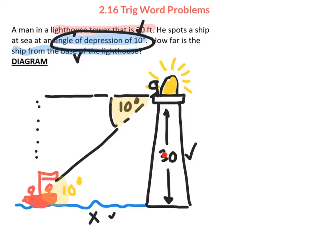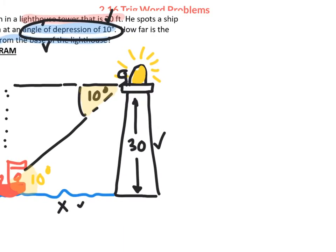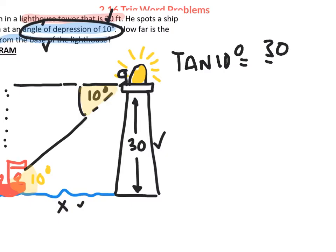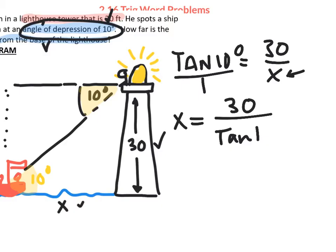Moving the angle into the lower triangle, this is tangent — here's the opposite (30) and here is the adjacent (x). The tangent of 10 degrees equals 30 over x. Since x is in the denominator, this becomes x equals 30 divided by the tangent of 10 degrees. The distance the boat is from the base of the lighthouse is approximately 170.14 feet.